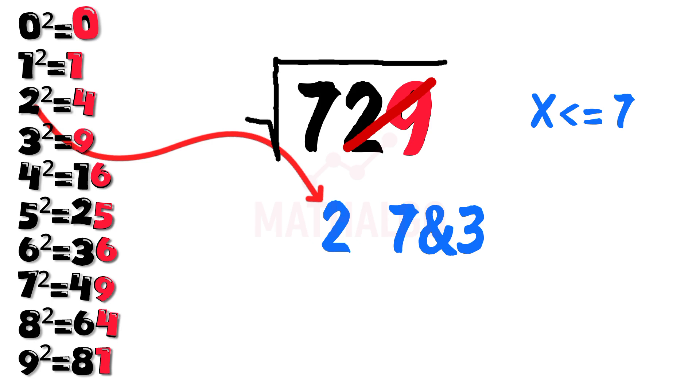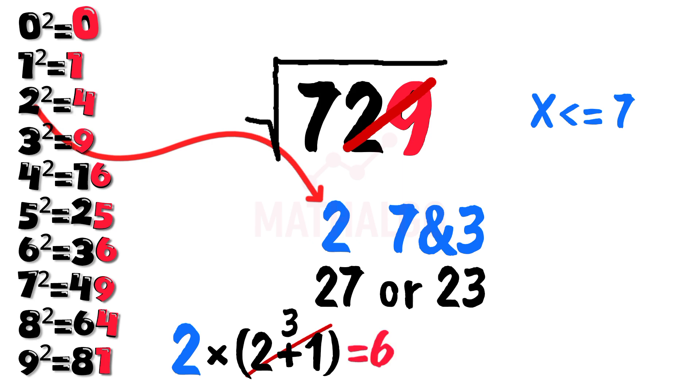So now we have two possible answers, 23 or 27. Which one is it? Easy. Just multiply the 2 by the next number. Now compare. Is 7 bigger or smaller than 6? It's bigger, so we choose the larger number, which is 27.